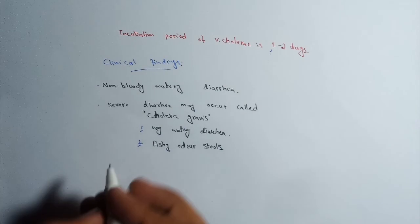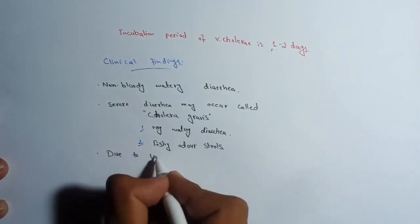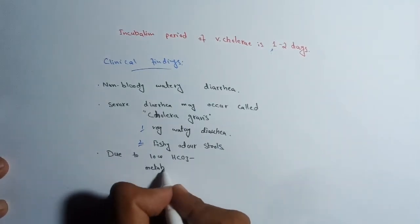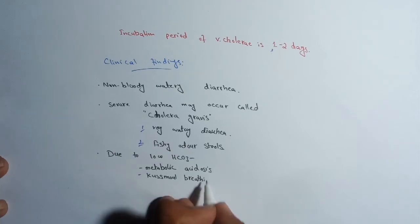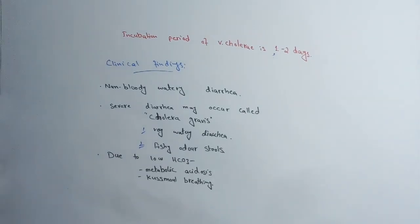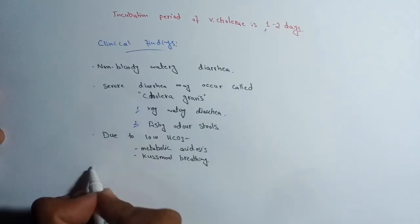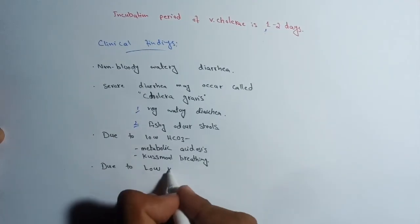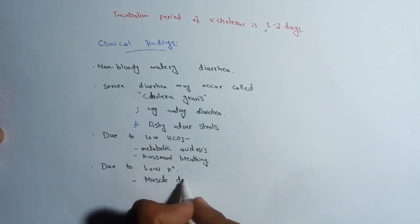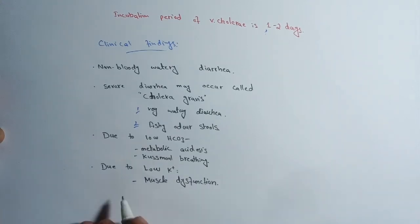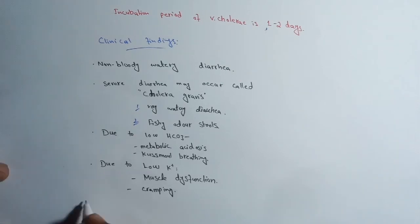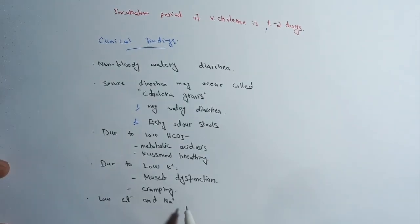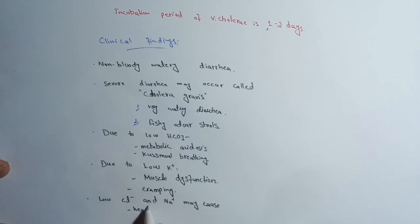Due to low HCO3 concentration, metabolic acidosis may be there. Metabolic acidosis is characterized by an imbalance in the body's acid-base balance, meaning there will be more acid inside the body. Kussmaul breathing can also be there. Kussmaul breathing is the deep, labored breathing pattern that indicates that the body organs have become too acidic.